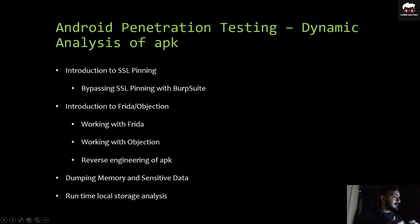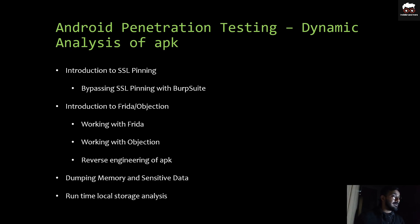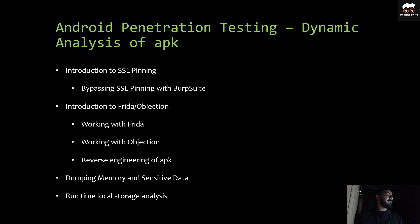For the dynamic analysis part, I will cover an introduction to SSL pinning and bypassing techniques with Burp Suite, an introduction to Frida and Objection, the working of Frida and Objection, and most importantly reverse engineering of an APK and rebuilding that APK to remove its main functionality from production. Apart from that, I'll cover dumping memories and sensitive data, and lastly runtime analysis of local storage of an application running on mobile devices.